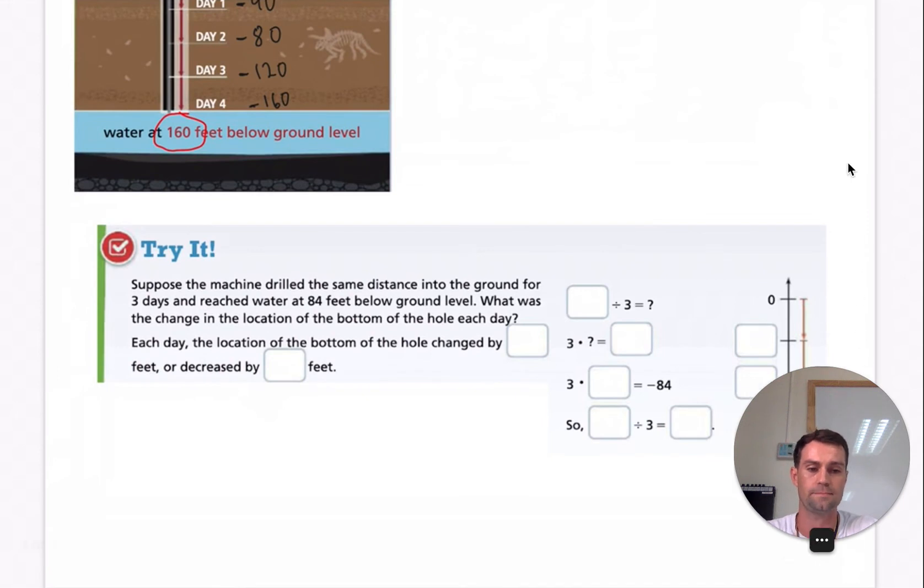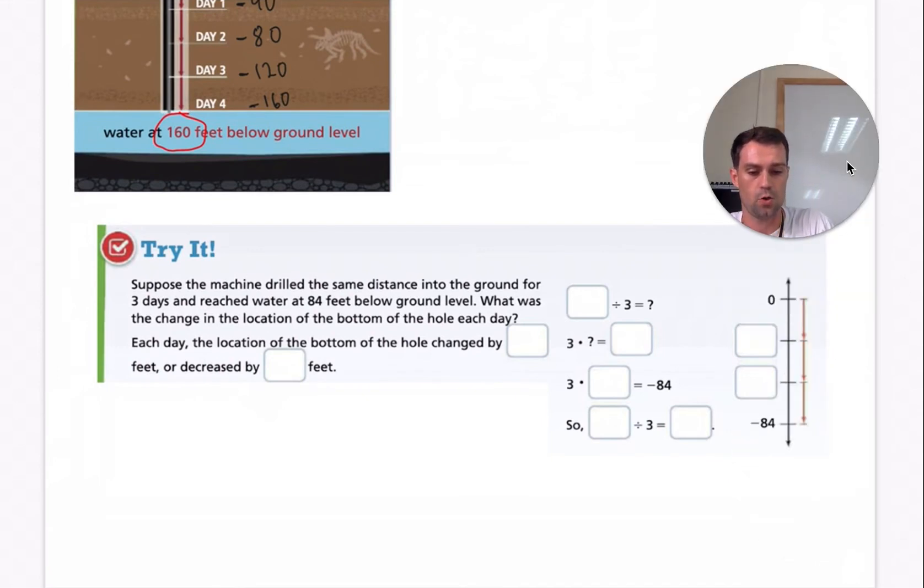All right. So we can say that it will be 84 divided by three, negative 84 because it's going down. So then it will be three times what would be negative 84? We could think about it that way. Opposite, right? So three times negative 28 is negative 84. So negative 84 divided by three is negative 28. So we're just undoing the division here to see that it is true. It's just the opposite.